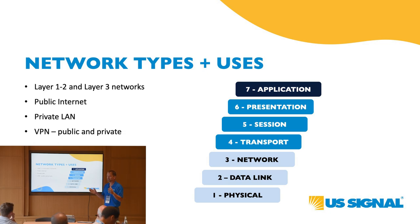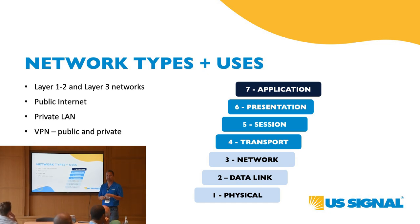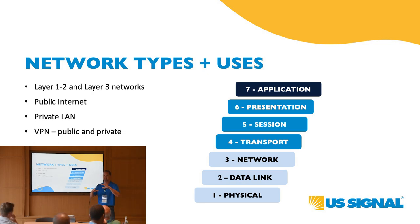You'll hear us talk about US Signal's fiber network today and tomorrow at various points. That fiber network — the foundation of it — is that physical layer. We have 10,000 miles of fiber. We laid that Layer 1 of the OSI model out there to build all these other services off of. You also have that Layer 1 physical piece in your office — your Cat6 cable that goes between your computers, routers, and switches.